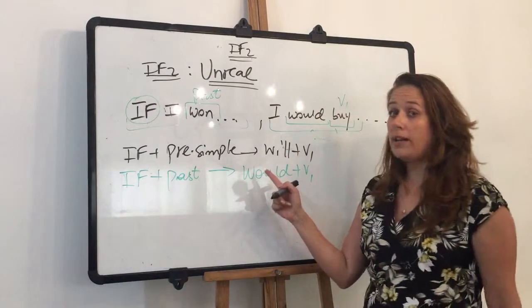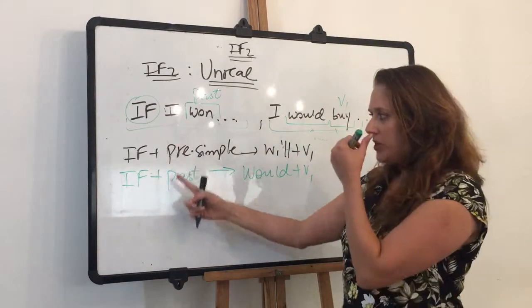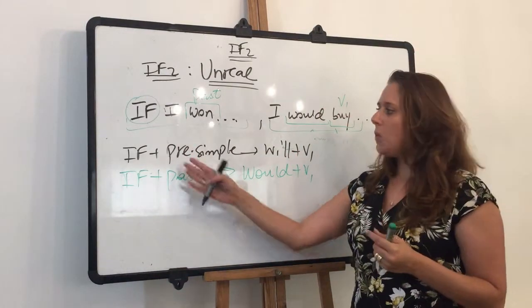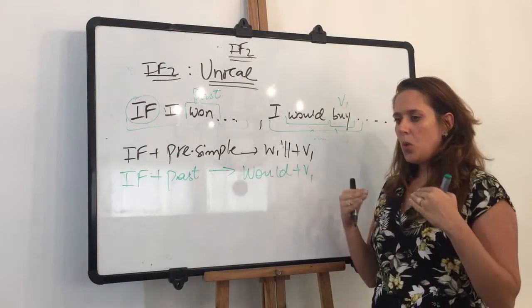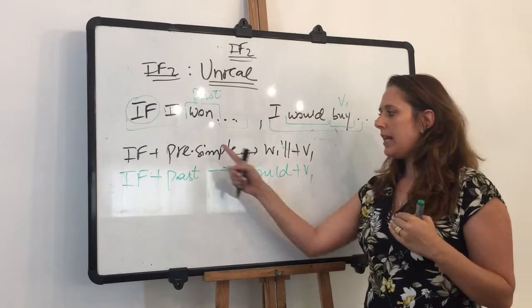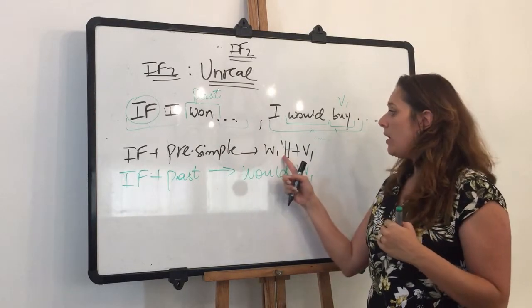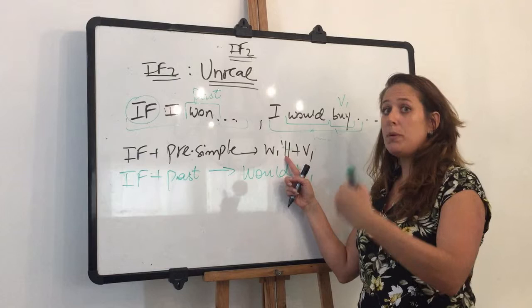This is the structure for if one. I wrote it here so you can see the differences. What happens between if one and if two? Present simple, I have to go one step backward and I get past. Will,